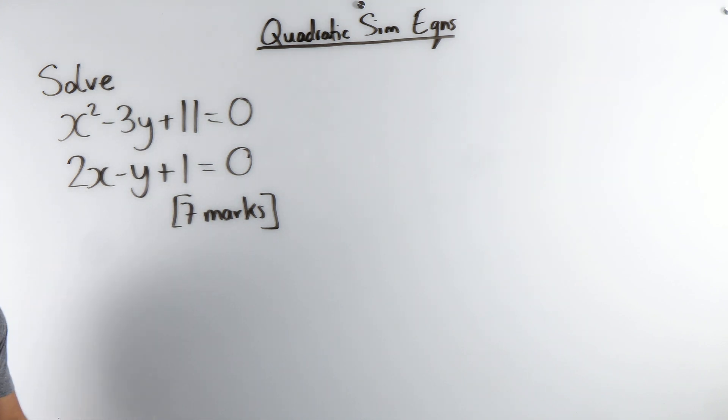So the first thing we do is we take the linear equation, so the one that does not have a squared in it, and rearrange for either x or y.